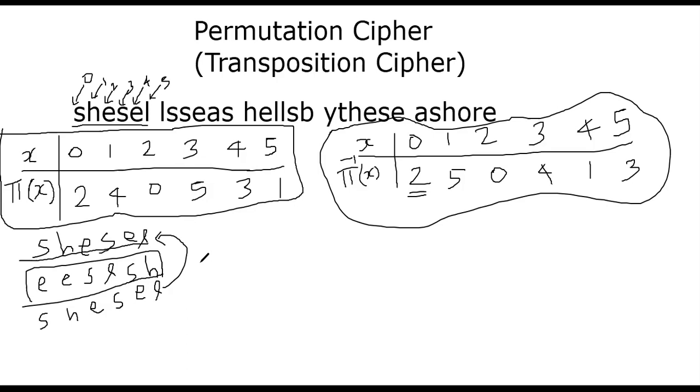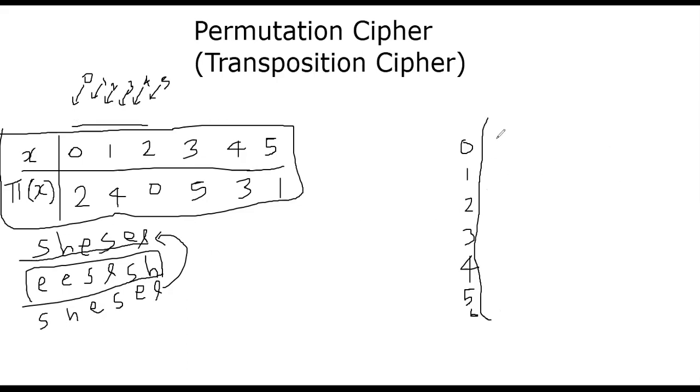Nevertheless, I also wanted to warn you that this is not secure. One is the frequency information is leaked. Another is that if you know one pair of plain text and ciphertext, you will be able to recover this matrix, the mapping function. I actually said matrix—let me now explain also a matrix view of this.